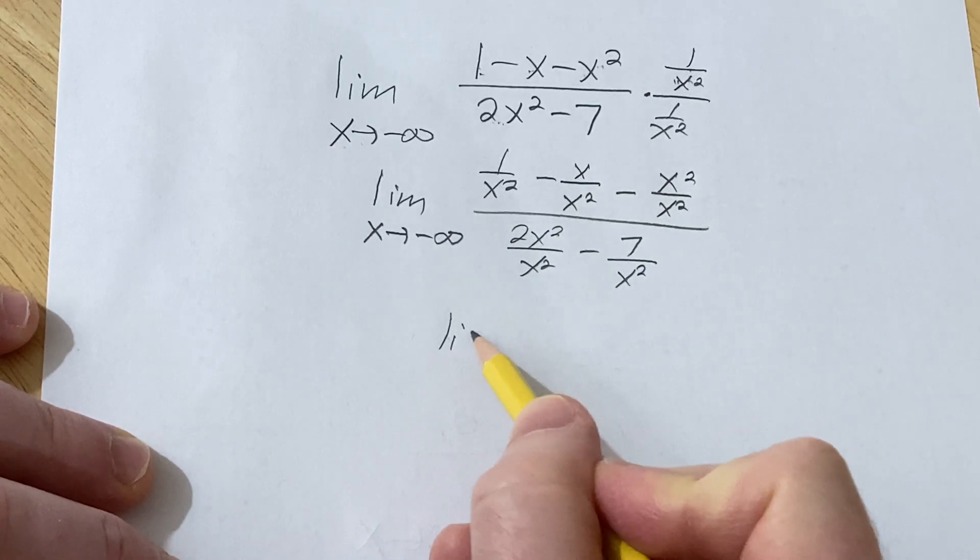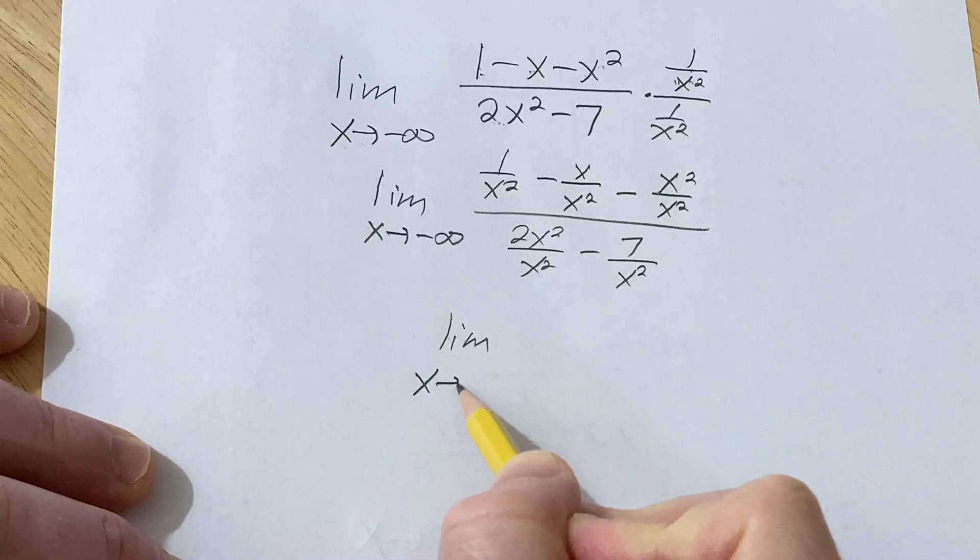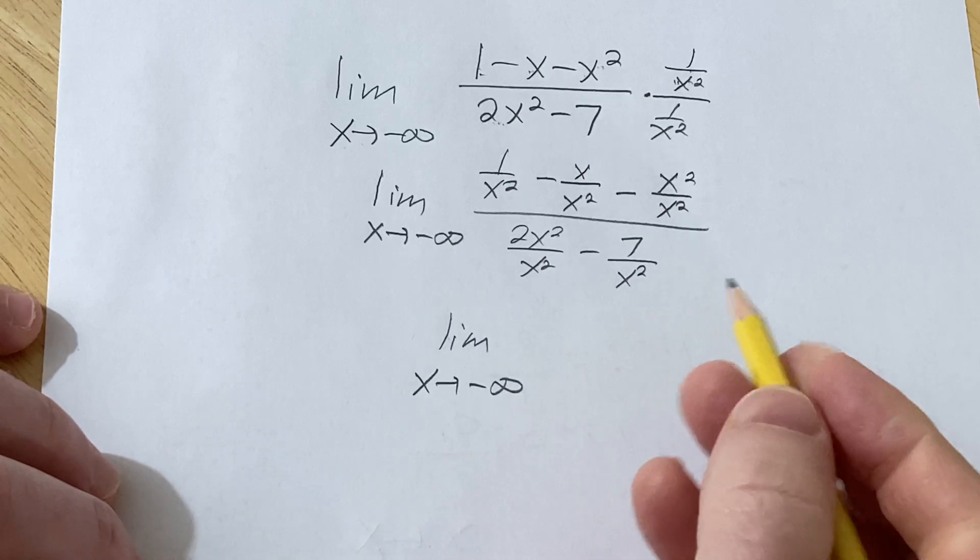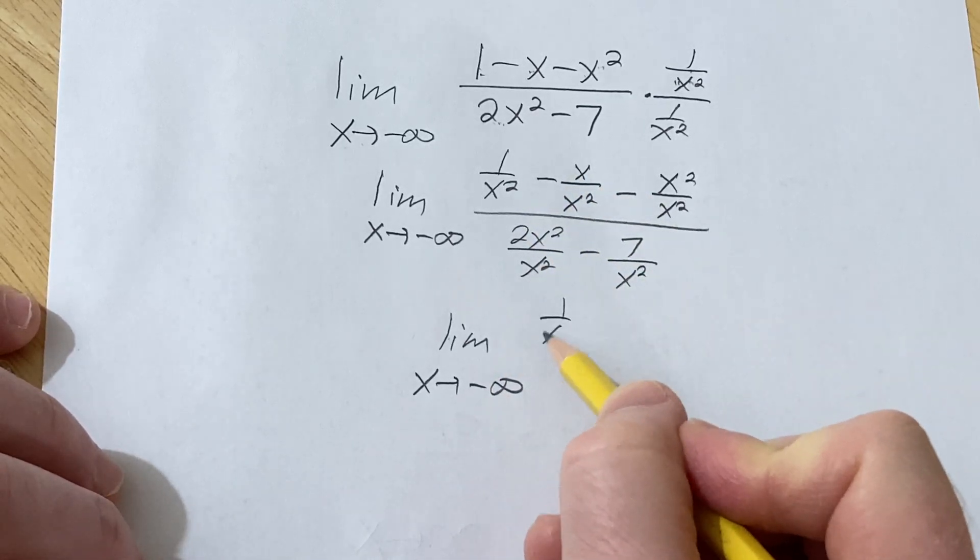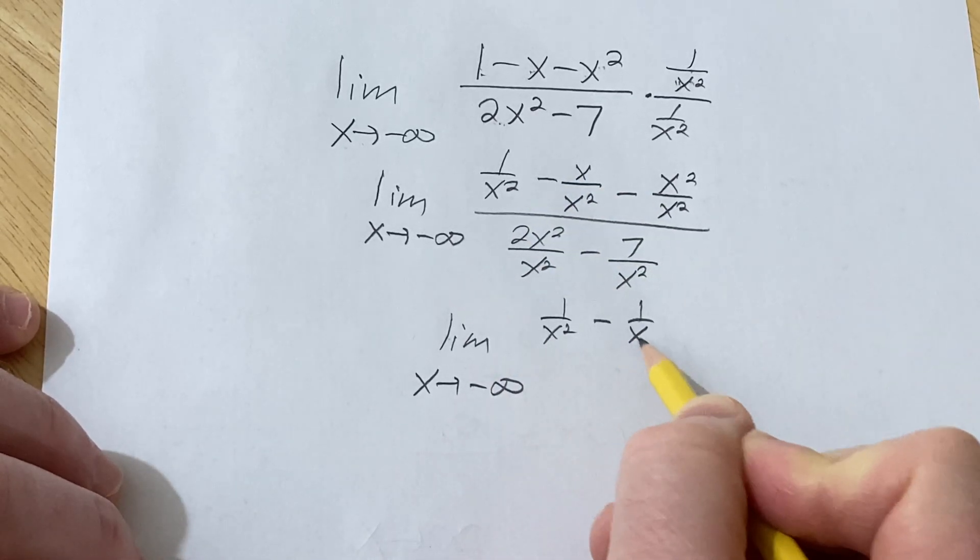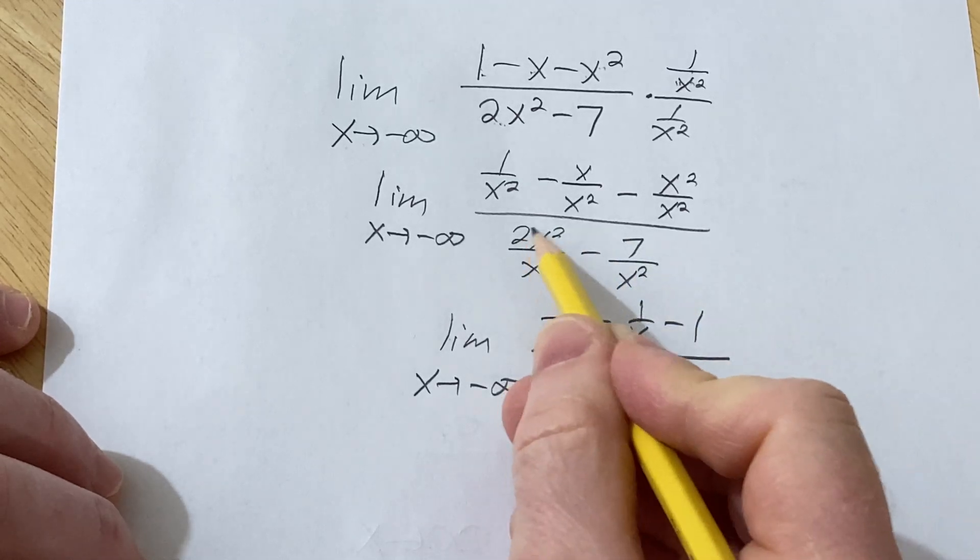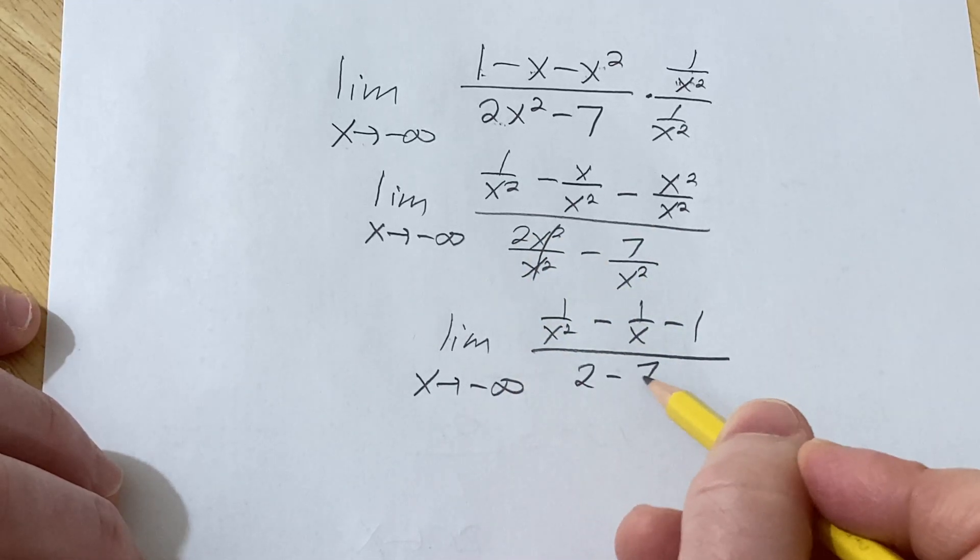So this is equal to the limit as x approaches negative infinity of 1 over x squared minus 1 over x minus 1 over 2 minus 7 over x squared.